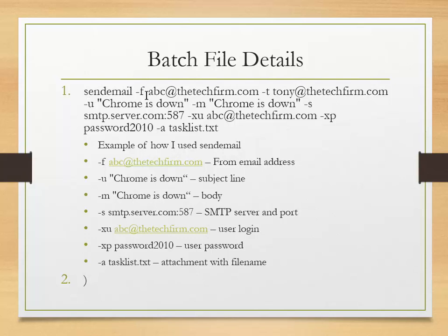Now on to the email. You'll see the sendEmail command and it looks fairly overwhelming but it's not. The -f flag is 'from' — your from email address. -u is the subject line, for example 'Chrome is down.' -m is the message body. With sendEmail you can also do -a for an attachment, so you can attach a log file if you want. -s is your SMTP server, and I also specified a non-standard port. -xu is the user login and -xp is the user password. And then I attached that text file so I could see all the tasks that were running at that time.